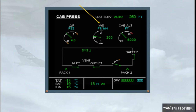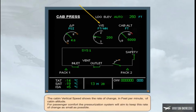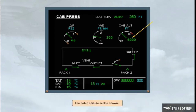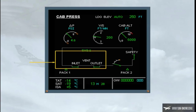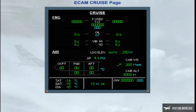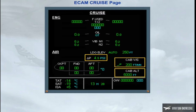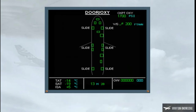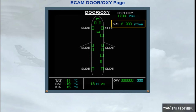For passenger comfort, the pressurization system will aim to keep this rate of change as small as possible. The cabin altitude is also shown. The vent, inlet, and outlet indications are related to the avionics ventilation system and will be discussed later. On the ECAM cruise page, there are indications of cabin differential pressure, cabin vertical speed, and cabin altitude. There is also an indication of cabin vertical speed in the ECAM D gauge, which is only displayed when the aircraft is airborne.